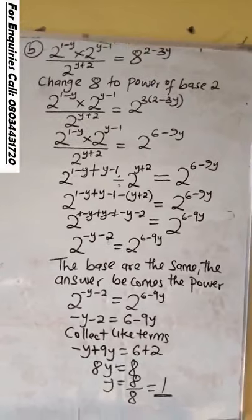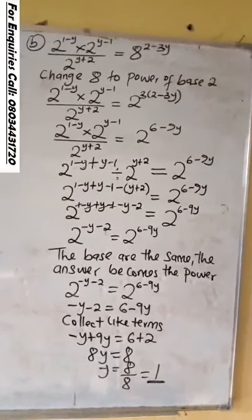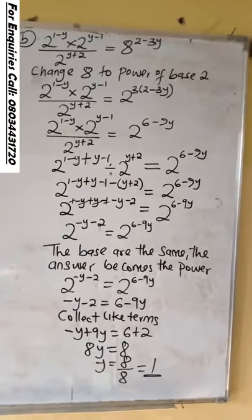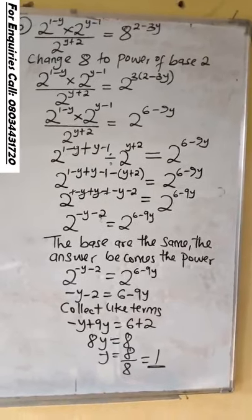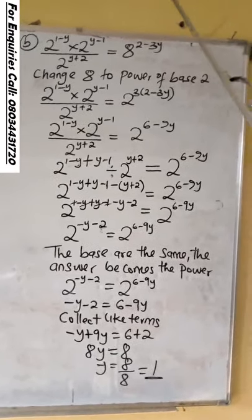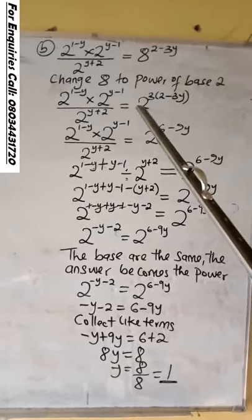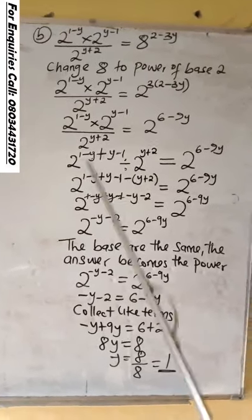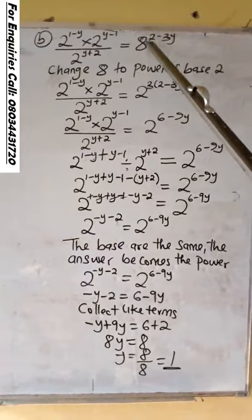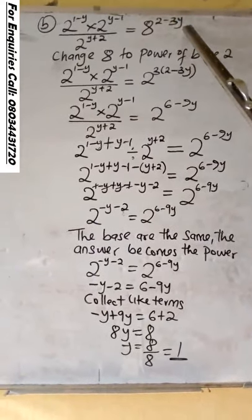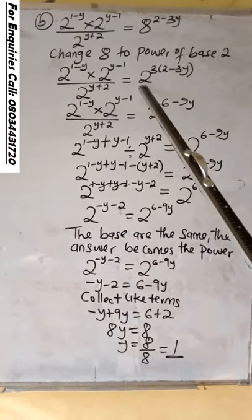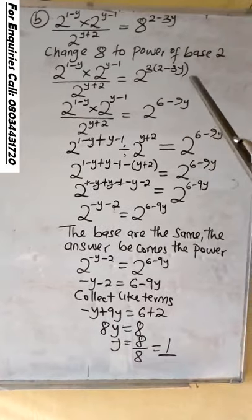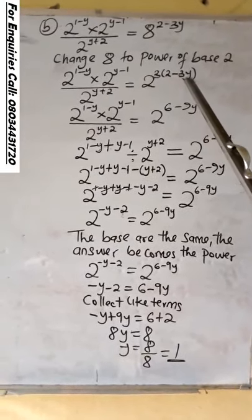The least base there is 2. So, change 8 to a power of base 2. When you change 8 to a power of base 2, you are going to have 2 raised to the power 3. Now, the 8 there is having power 2 minus 3y. So, it is going to be 2 raised to the power 3 into 2 minus 3y.